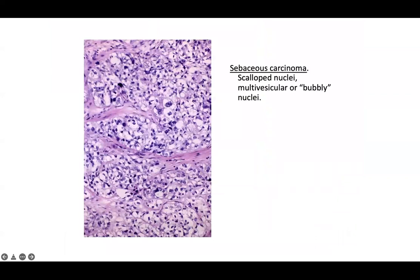A friendly reminder: when you see proliferating cells with scalloped nuclei, multi-vesicular changes around nuclei and cytoplasm, or bubbly cells — consider sebaceous differentiation and perform a lipophilin stain. A PRaIN stain using the EPR2330 clone can also highlight sebaceous differentiation; recent papers show it's on par with lipophilin for marking sebaceous areas. However, in a poorly differentiated sebaceous carcinoma, you may not find abundant classic sebaceous vacuoles that stain positive.